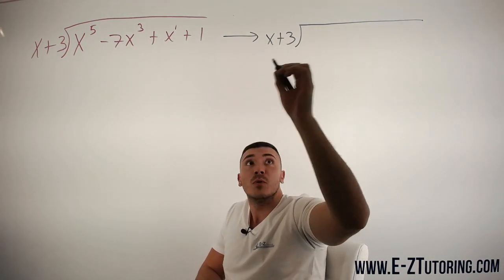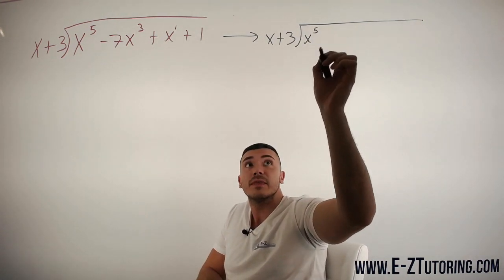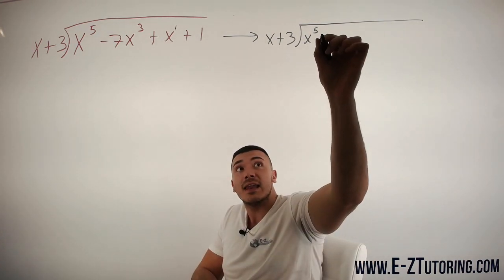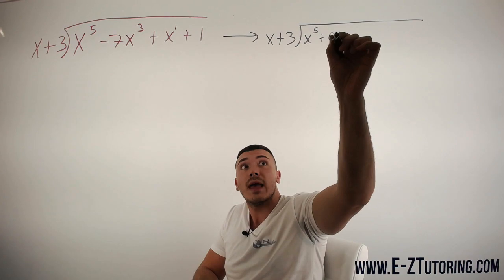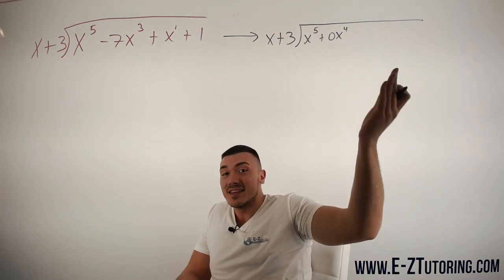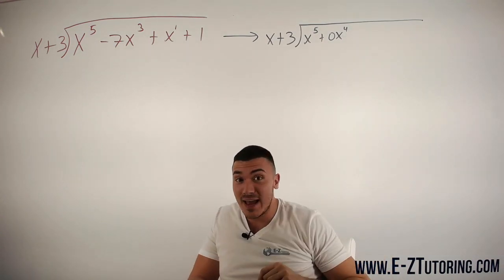So here's what I mean. We're going to take this polynomial. We're going to write x to the fifth. Now there is no x to the fourth, however I can add it in there by saying 0x to the fourth. This is the same thing as saying zero, but at least now we have x to the fourth there.